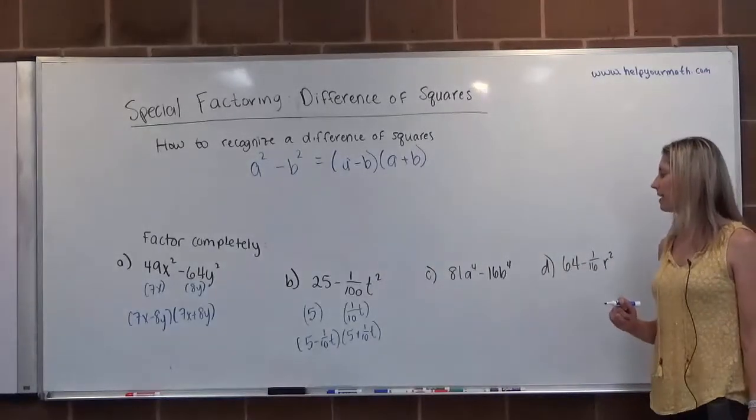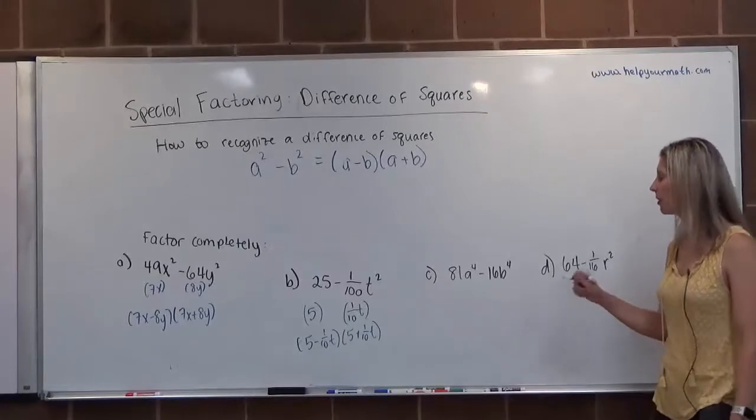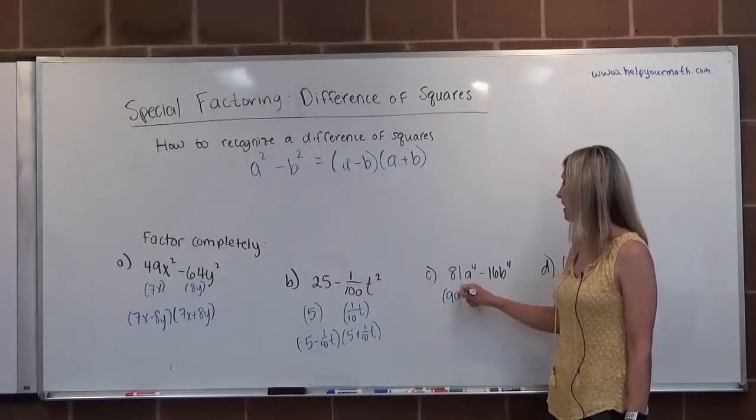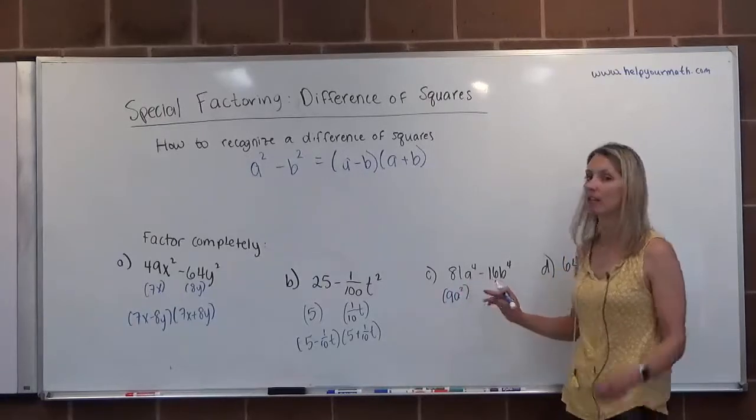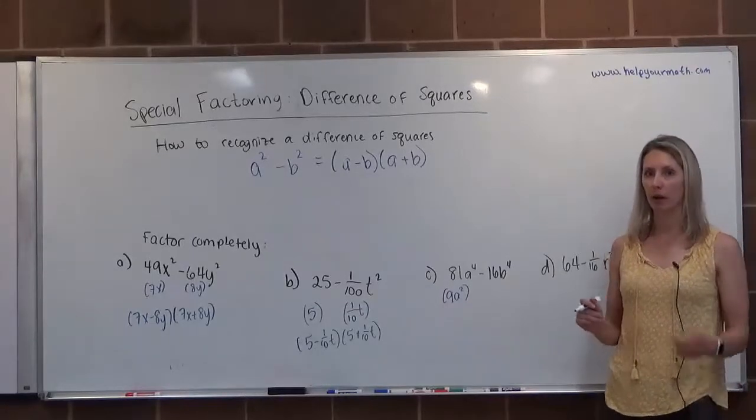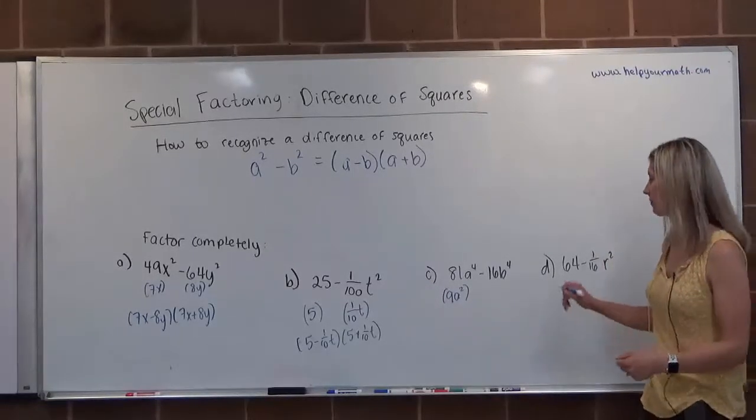For letter C, we have 81a to the 4th minus 16b to the 4th. 81a to the 4th, that's a perfect square. Its root is 9a squared, right? Because that's a to the 4th. This one's a little bit different than what we've seen. The square root of a to the 4th would be a squared, since a squared times a squared equals a to the 4th.